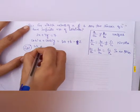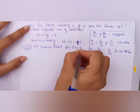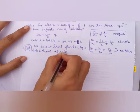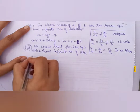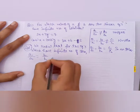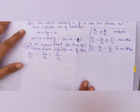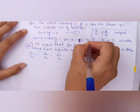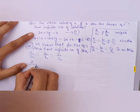We know that for equations which have infinite number of solutions, a1/a2 = b1/b2 = c1/c2. Now we will apply the values of a1, a2, b1, b2, c1, and c2 from the given equations. This is Equation 1 and this is Equation 2. The value of a1 is 2, so we write 2 upon the value of a2, which is (a − b).